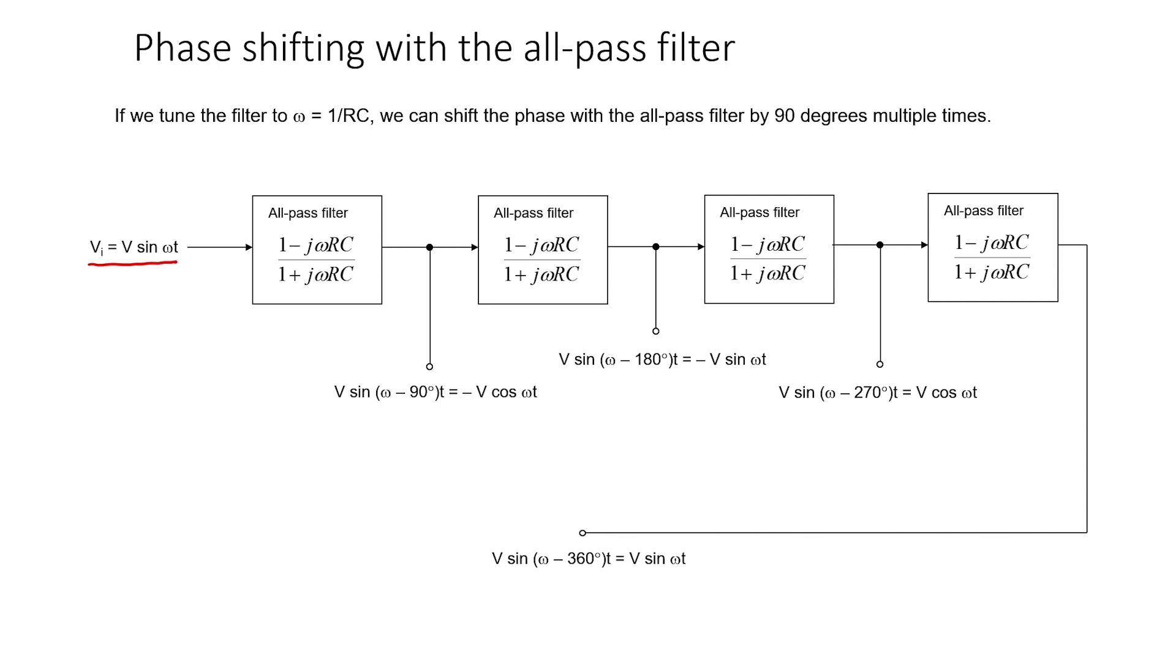After this signal emerges from the first filter, the phase will have shifted by negative 90 degrees. When the signal emerges from the second filter, it will be completely inverted from the input signal. The third and the fourth filters also shift the phase by another 90 degrees.